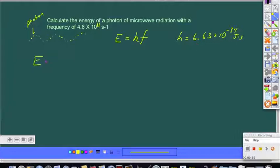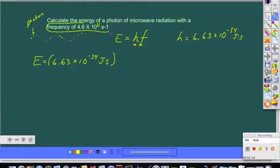to calculate the energy of a photon, we're going to put Planck's constant into the equation. Joules seconds. And we're going to multiply it by the frequency of the radiation, which was given to us. The frequency of this wave is 4.6 times 10 to the 11th.